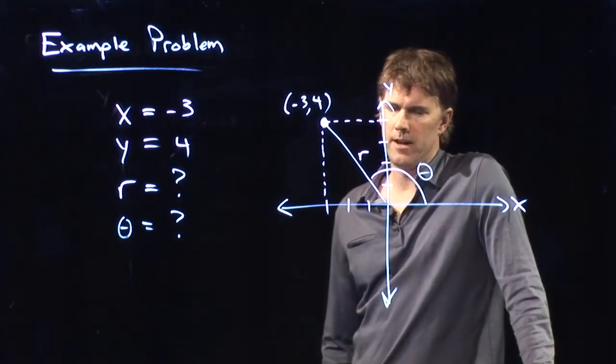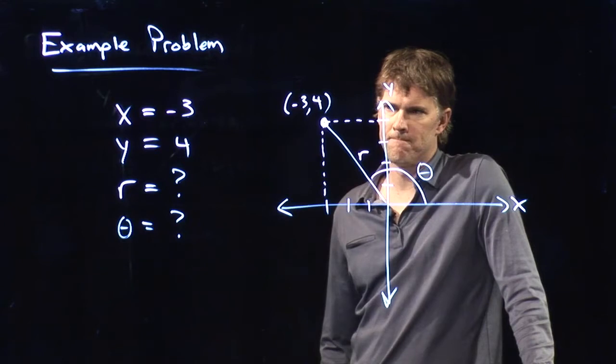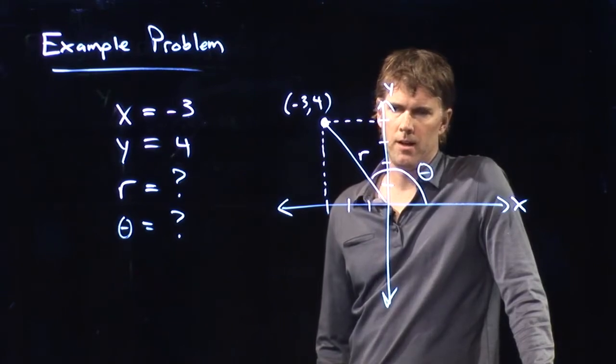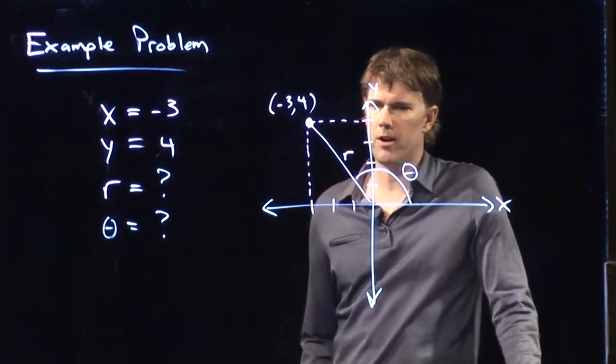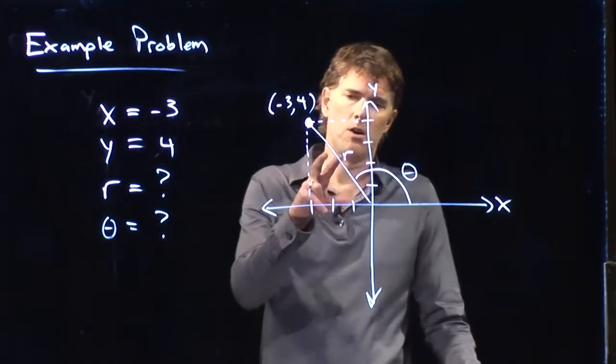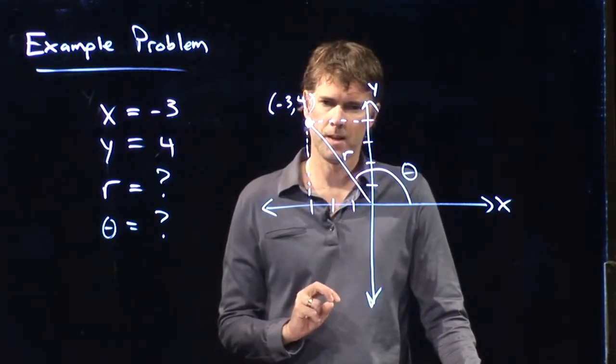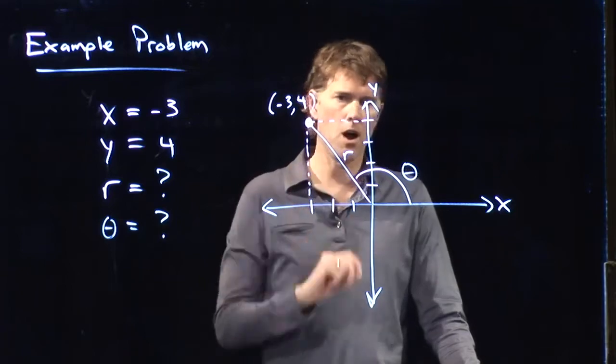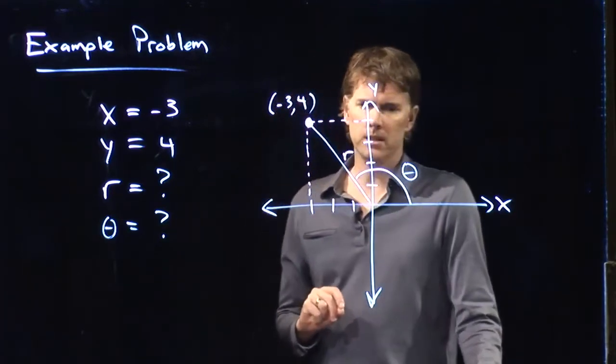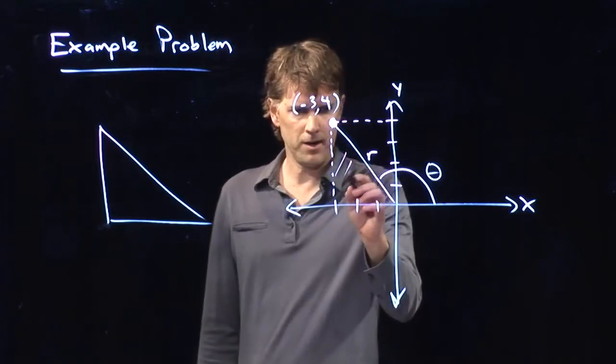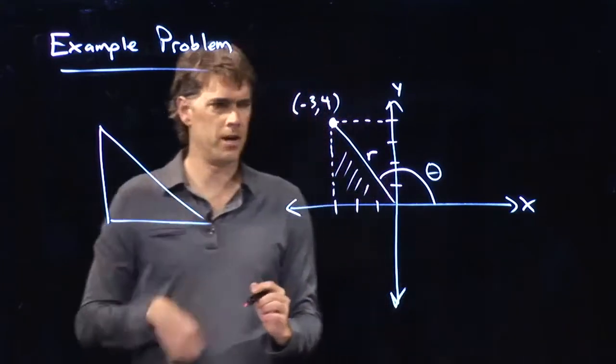All right, now what do we do? Well, I think we can go back to our trig relations and figure out how r and theta relate to this particular x and y. And let's redraw this triangle to visualize that. Okay, I've taken this triangle right here, and I've redrawn it right there.